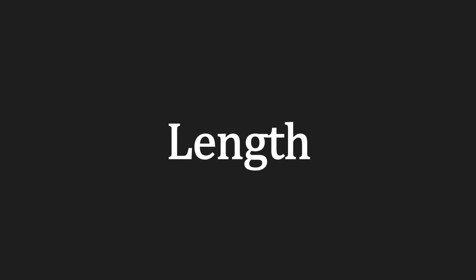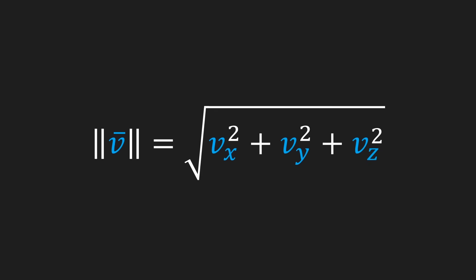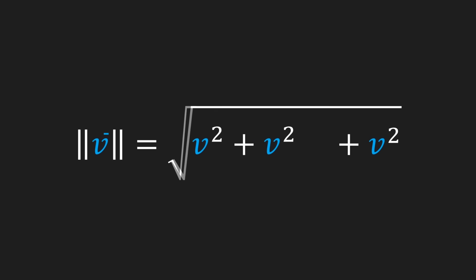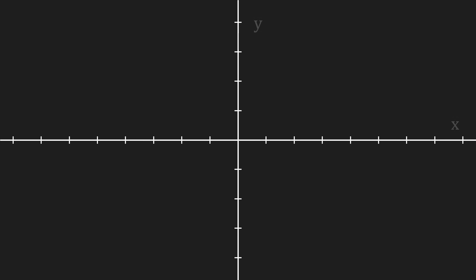Talking of length, let's actually discuss the length of a vector. We also refer to it as the magnitude or norm. We represent it by writing these two vertical bars on either side of our vector, and in two dimensions the length of a vector is defined by this formula. We can extend that to three dimensions and even write a version for the generic n-dimensional vector. To understand how that formula works, we're gonna take our coordinate system and take a random vector — in this case vector v.